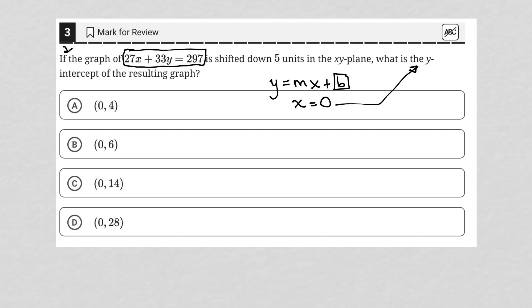So what I'm going to do is first find what is the y-intercept before it's shifted down five units. The simplest way to do that is to replace x with zero. We have - I'm sorry, not equals, but plus 33y equals 297.